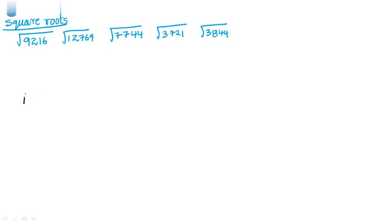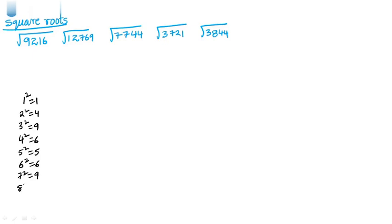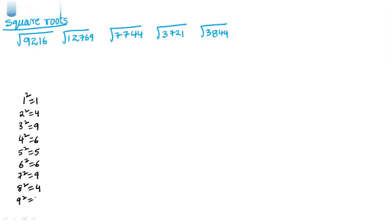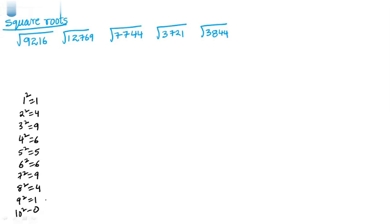Perfect squares table: 1 square is 1, 2 square is 4, 3 square is 9, 4 square is 16, 5 square is 25, 6 square is 36, 7 square is 49, 8 square is 64, 9 square is 81, 10 square is 100.